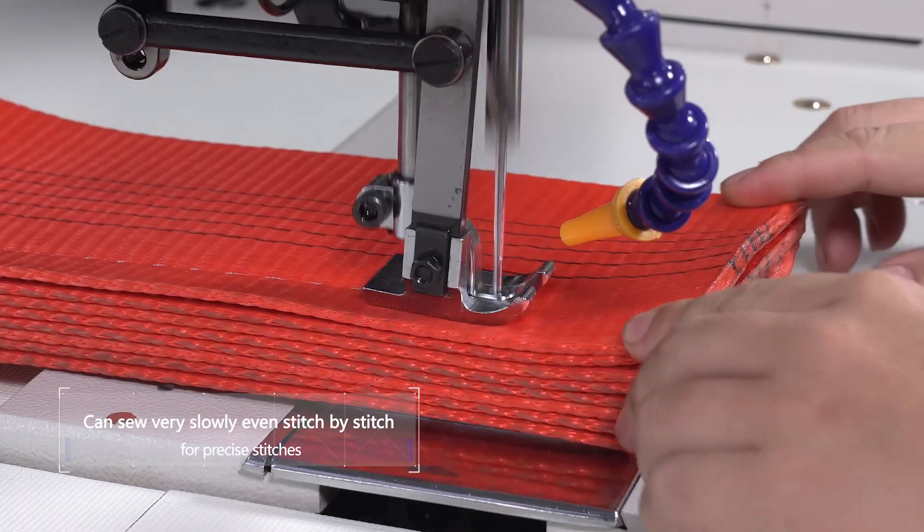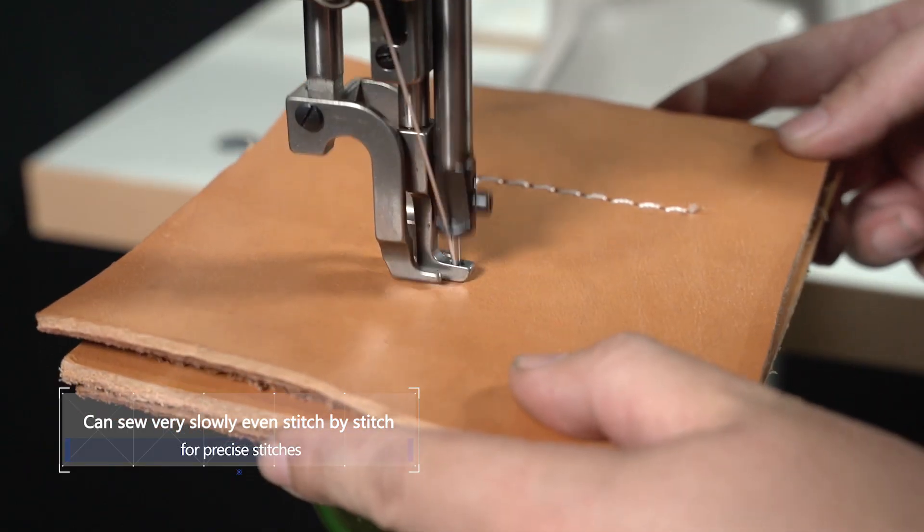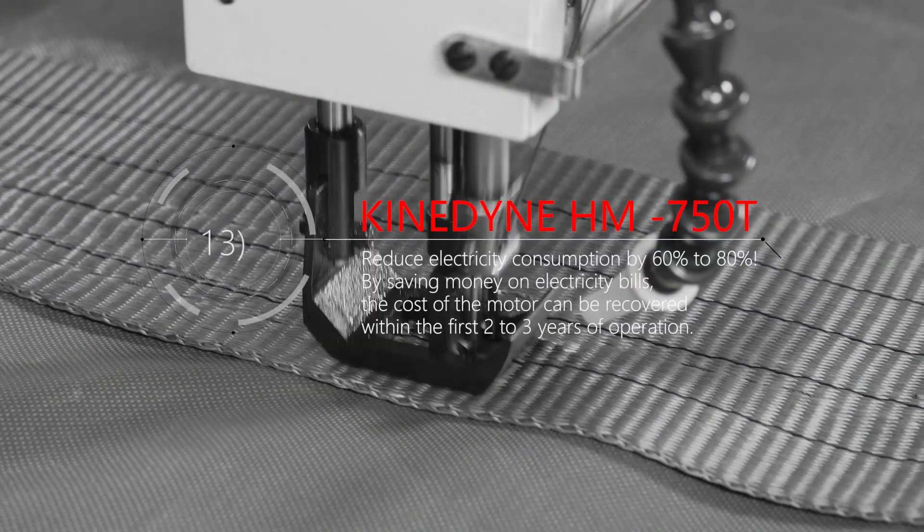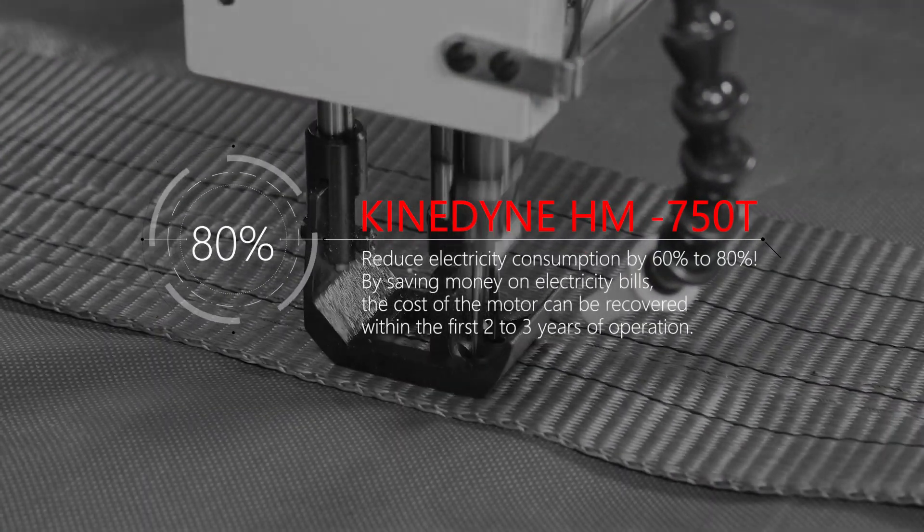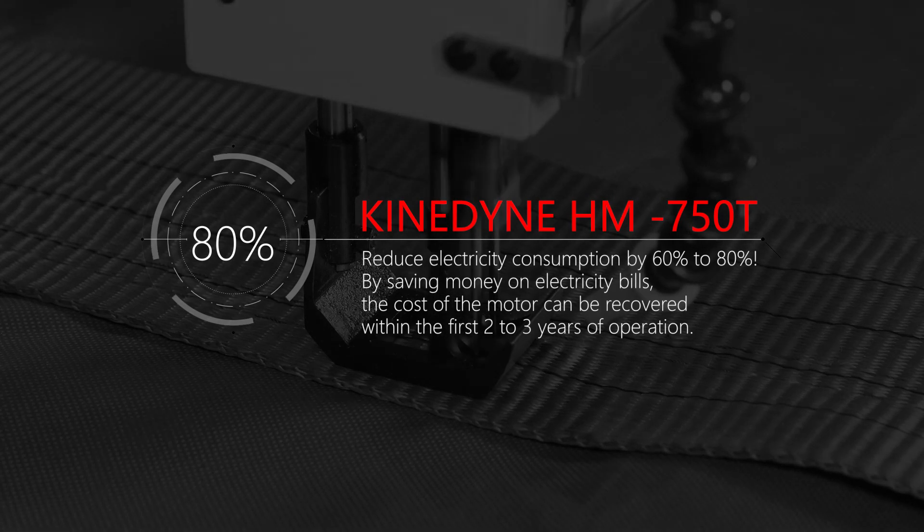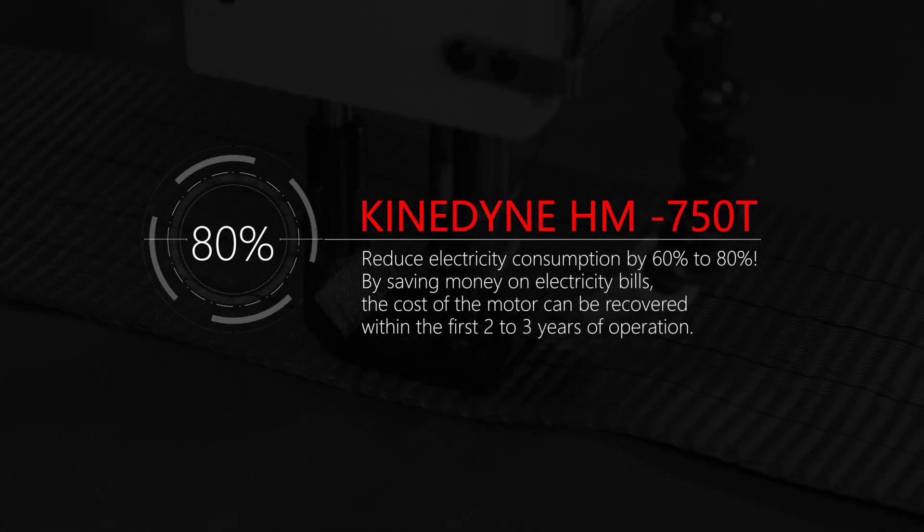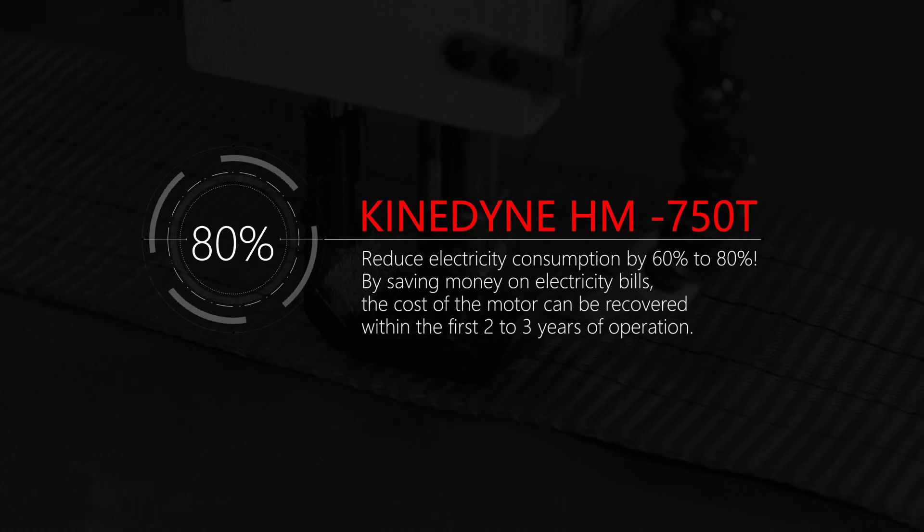Can sew very slowly, even stitch by stitch, for precise stitches. Reduces electricity consumption by 60% to 80%, saving money on electricity bills. The cost of the motor can be recovered within the first two to three years of operation.